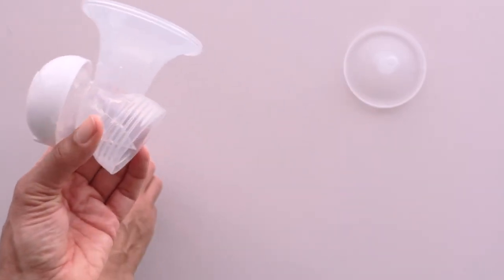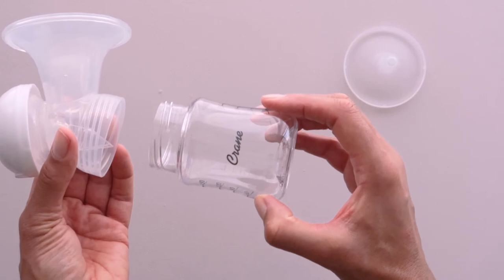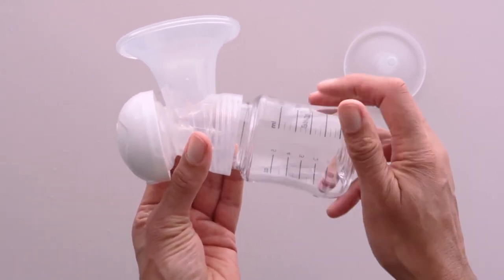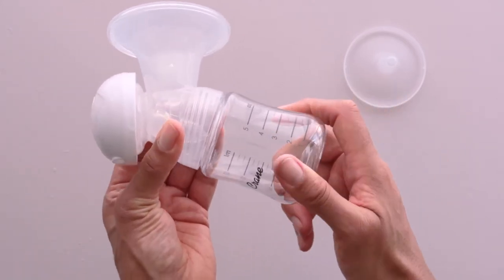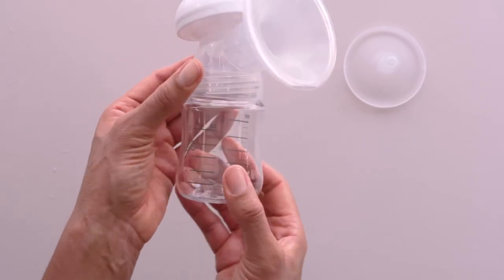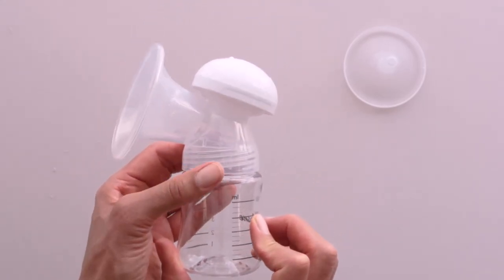Attaching the bottle. Carefully screw on the bottle into the base of the breast shield body. The bottles are made of Triton BPA-free plastic.